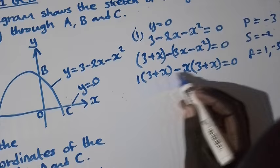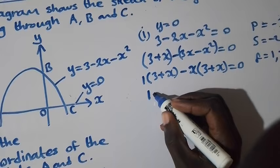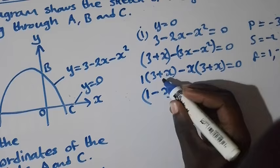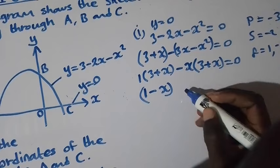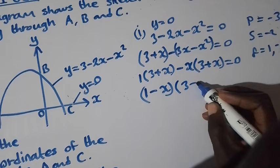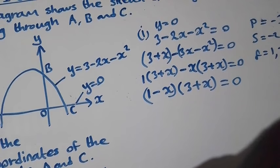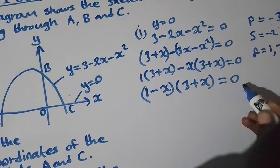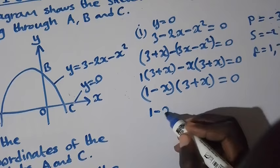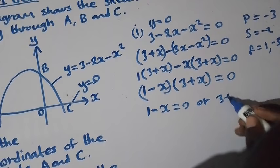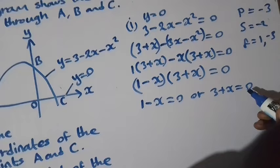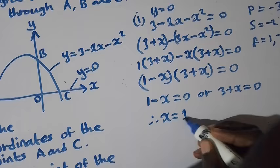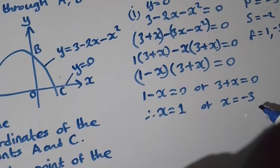We group the factors together. What is common in the second group is x, giving us x(3 + x). So we get (1 - x)(3 + x) = 0. We equate each factor to zero: 1 - x = 0 or 3 + x = 0. Therefore x = 1 or x = -3.